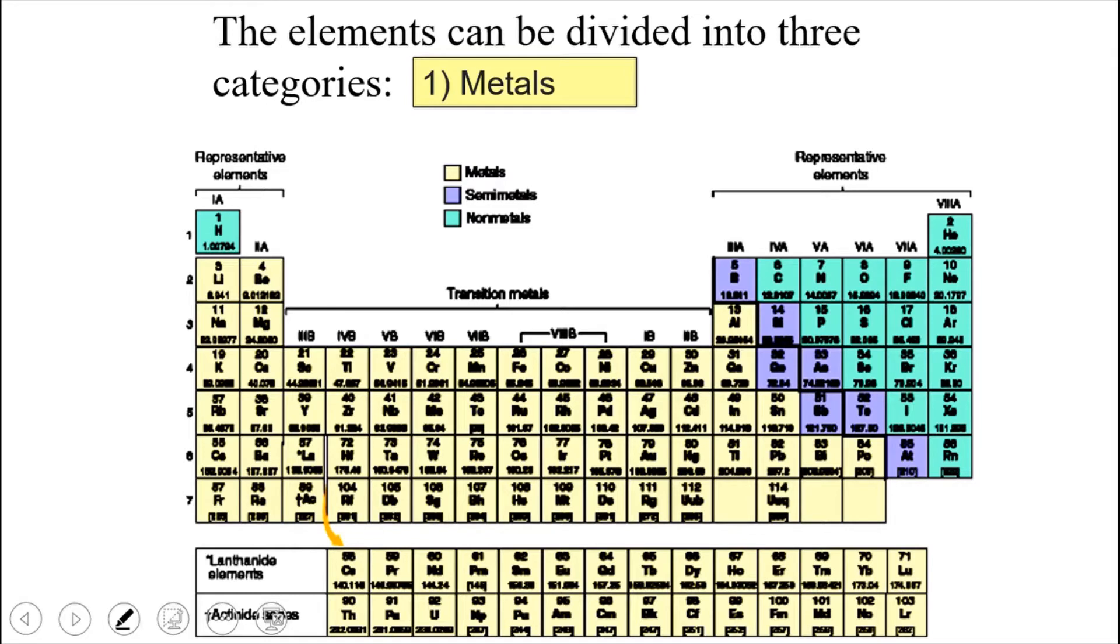The elements that are essentially sitting along that zigzag line, that diagonal, are called the semi-metals or sometimes called the metalloids. And then the elements that are in blue here, kind of like a light blue color, we're going to call these the non-metals. I'm kind of hesitating because I'm not sure that the colors are translating well into what you're seeing and what I have on my screen, but please forgive me for that.